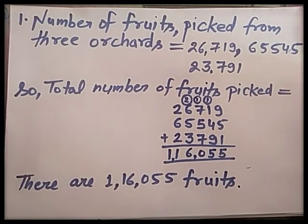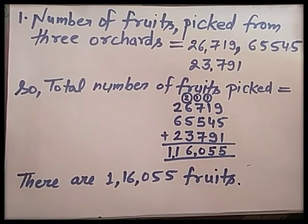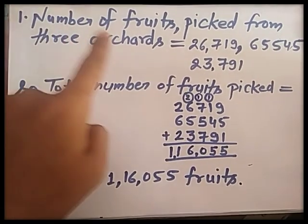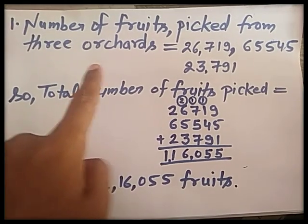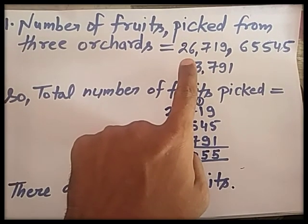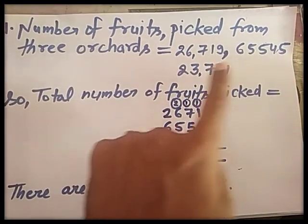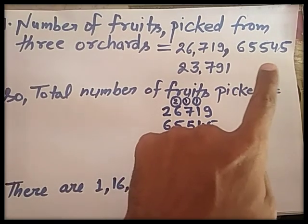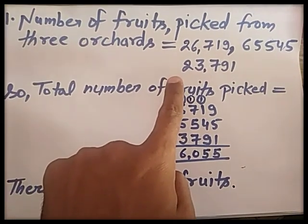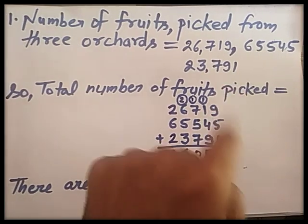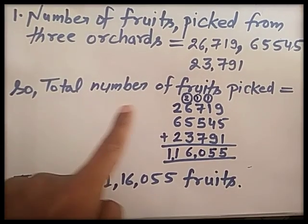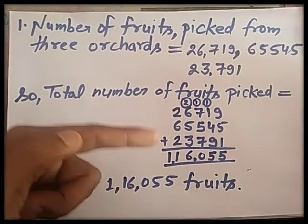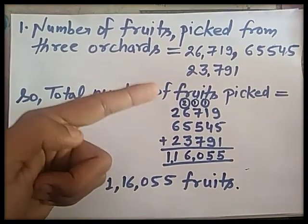Now I am going to solve this. First of all, the number of fruits picked from 3 orchards is given: 26,719, 65,545, and 23,791. So, total number of fruits picked equals, now I am going to add these 3 given numbers.